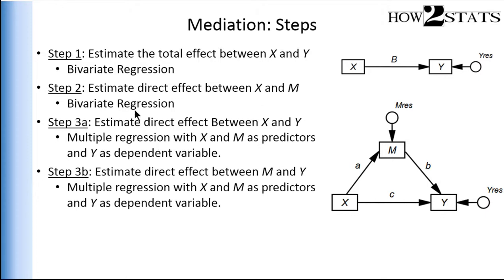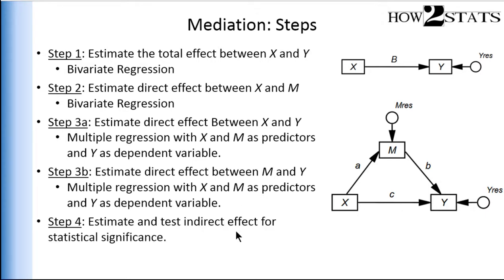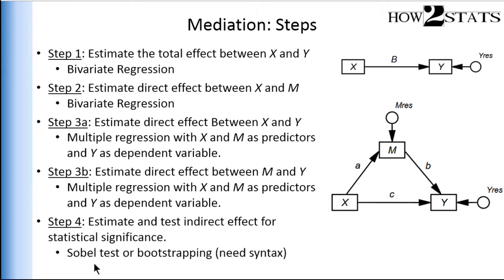So really the brunt of the analysis is one bivariate regression with x predicting m, and then one multiple regression with x and m predicting y. That gives you all three coefficients and standard errors needed to estimate the indirect effect. For statistical significance — step four — many people use the Sobel test, which requires a calculator from a web page or SPSS syntax. You can also estimate it through bootstrapping, and I'll show you both methods.